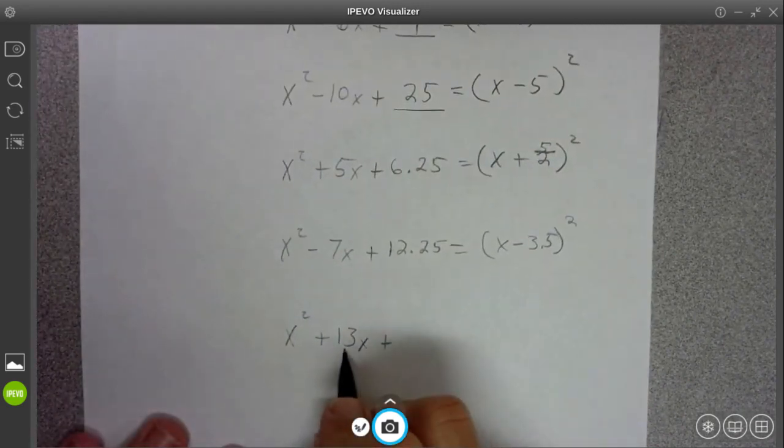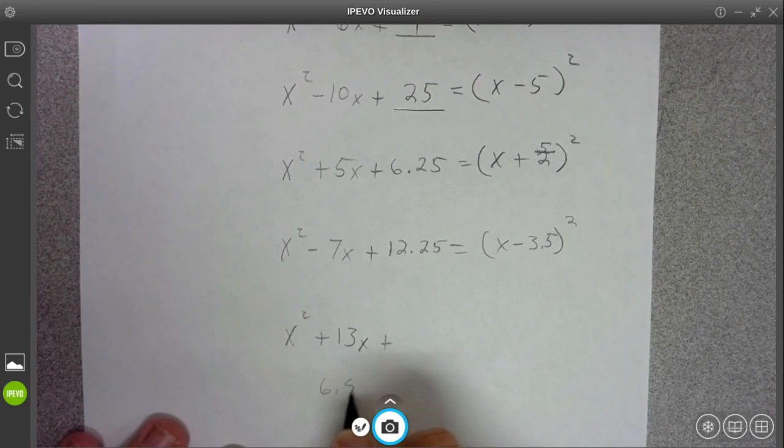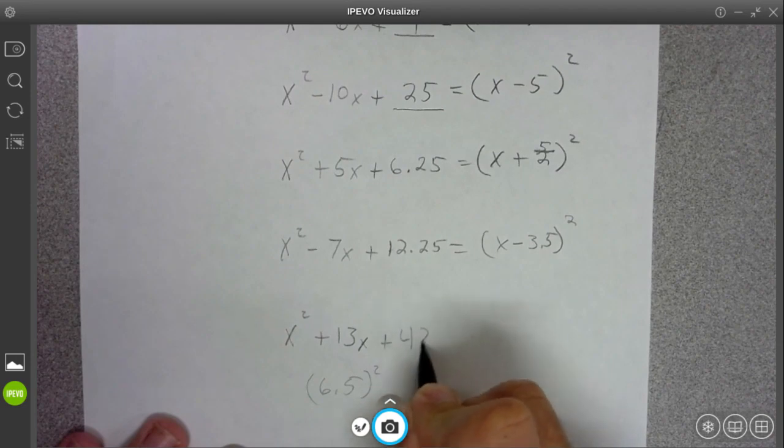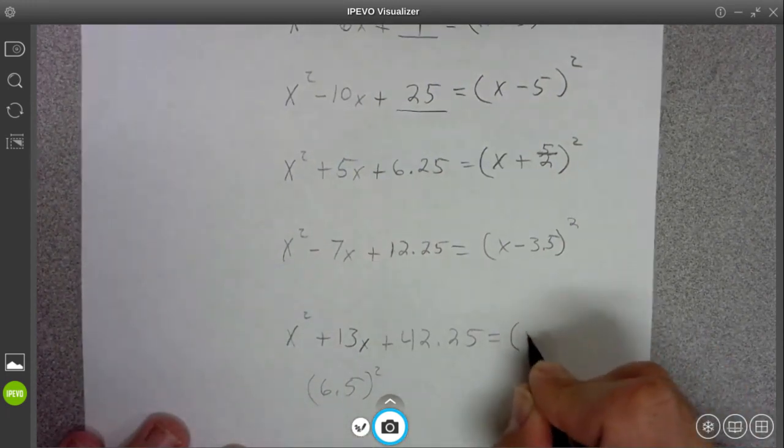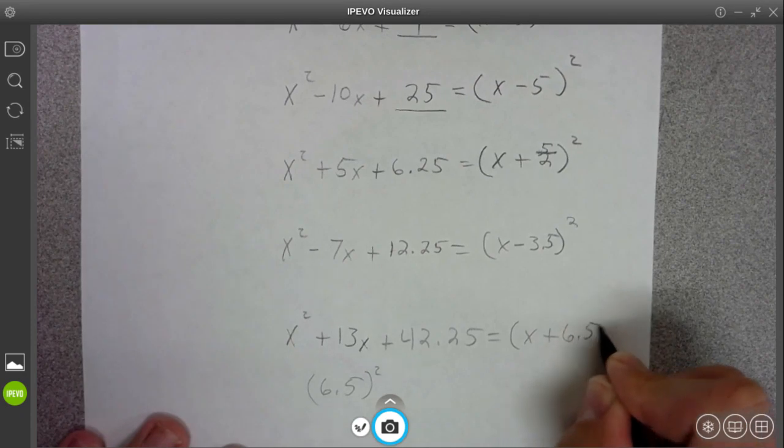Half of 13 is 6.5, and when you square that, you're going to get 42.25. You can square numbers like this in your head. There's a little trick for it. And then it's going to be 6.5.